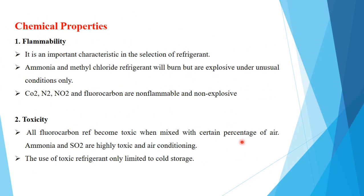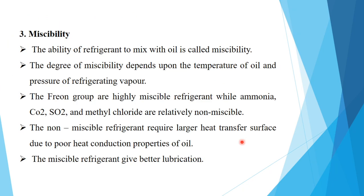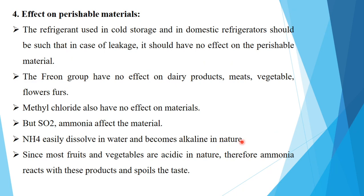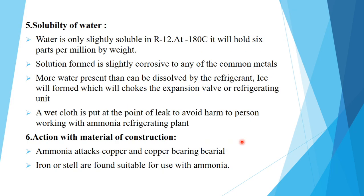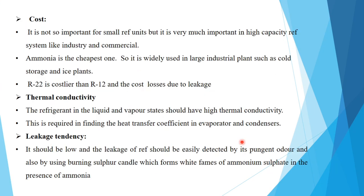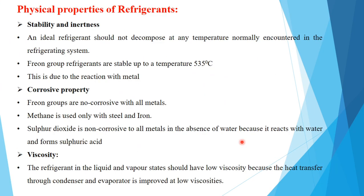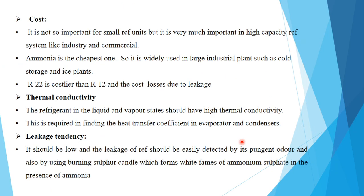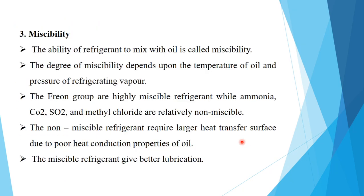To summarize: chemical properties include flammability, toxicity, miscibility, effect on perishable materials, solubility of water, and action with material of construction. Physical properties include stability and inertness, corrosive property, viscosity, cost, thermal conductivity, and leakage tendency.